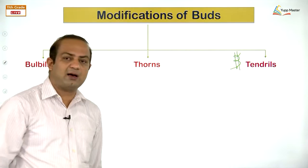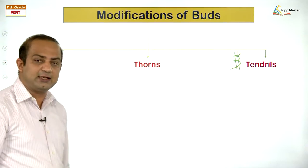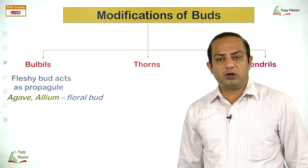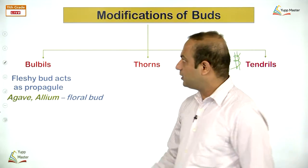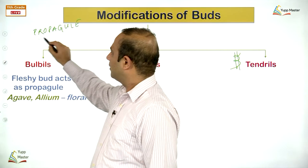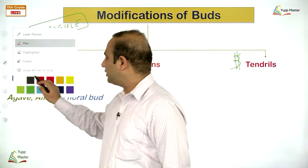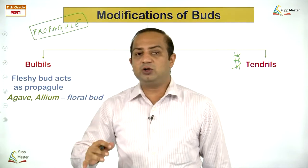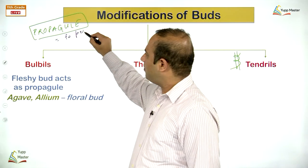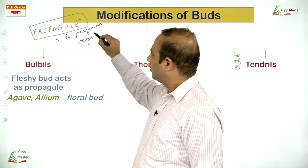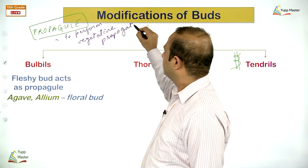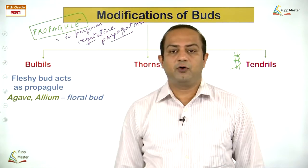In Vitis and Passiflora, the axillary bud gets modified — it comes from the axil. In cucurbits, the terminal bud becomes a thin coiled structure that attaches to nearby mechanical support. These are modifications of the bud based on function — vegetative buds bear leaves and branches, floral buds bear flowers. The largest bud is cabbage — Brassica oleracea var. capitata.